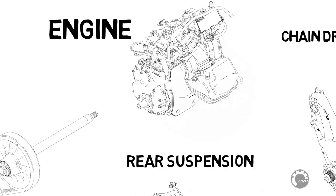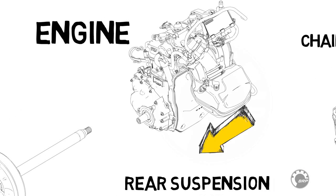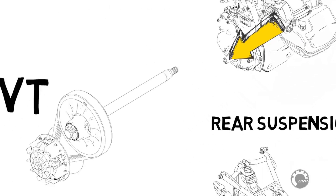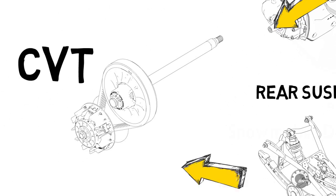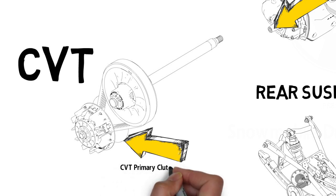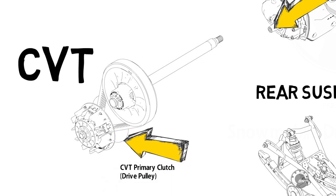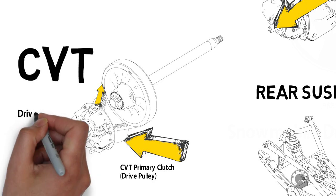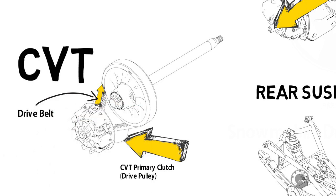In a snowmobile, torque is transmitted from the engine to the CVT's primary clutch, through the drive belt to the CVT's secondary clutch.